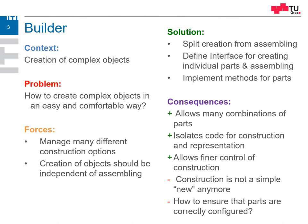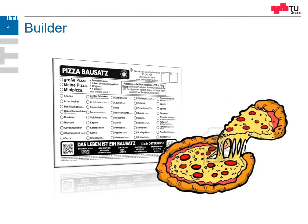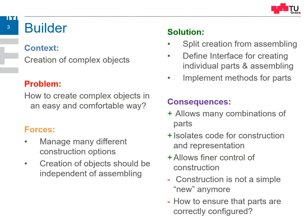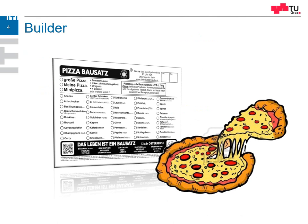The next thing is how can we ensure that all parts are configured correctly. Think of making a pizza — selecting all the ingredients and then the cook cooks it for you. But you don't know exactly if it will taste well, if the ingredients fit together. For example, if you have gummy bears and snails and mozzarella on the same pizza, it may not be the best option. Therefore, how to ensure that the parts are correctly configured — that's the builder. Thank you.